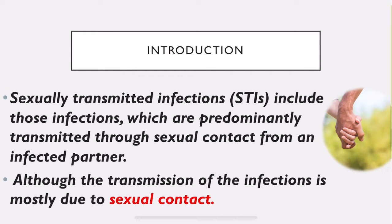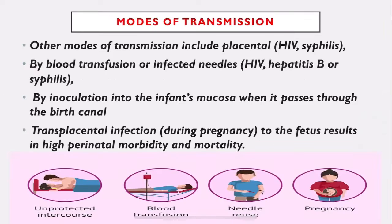Although transmission is mostly due to sexual contact, other modes of transmission include the placental route. HIV and syphilis can be transmitted through the placenta, by blood transfusion, or via infected and unsterilized needles. HIV, hepatitis B, or syphilis can also be transmitted by inoculation into the infant's mucosa when it passes through the birth canal.